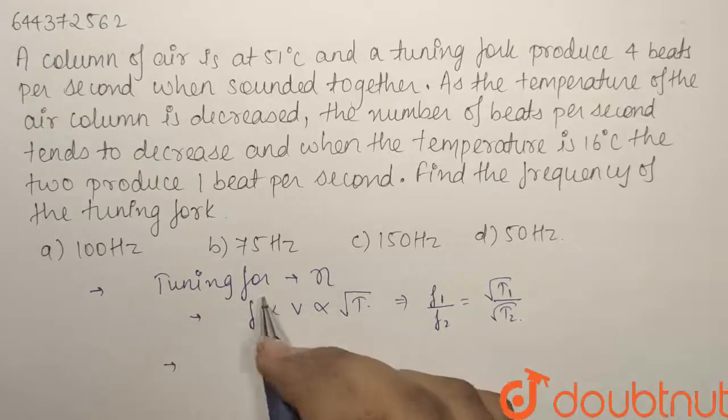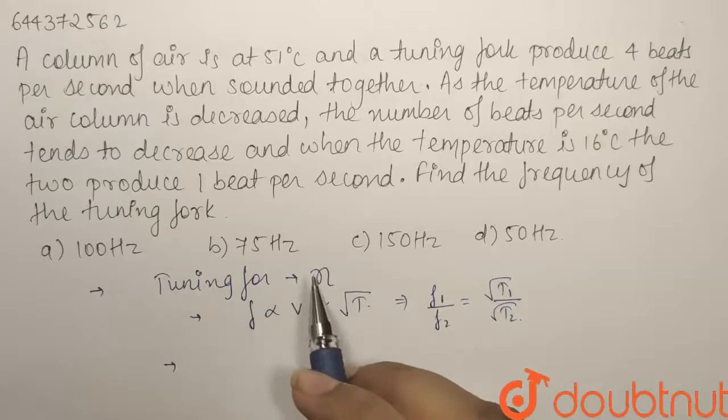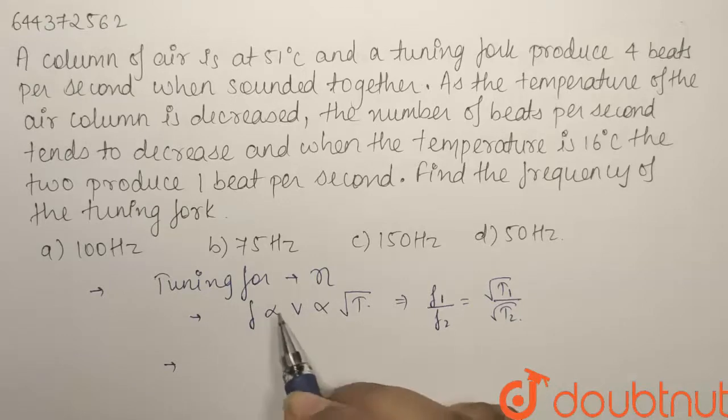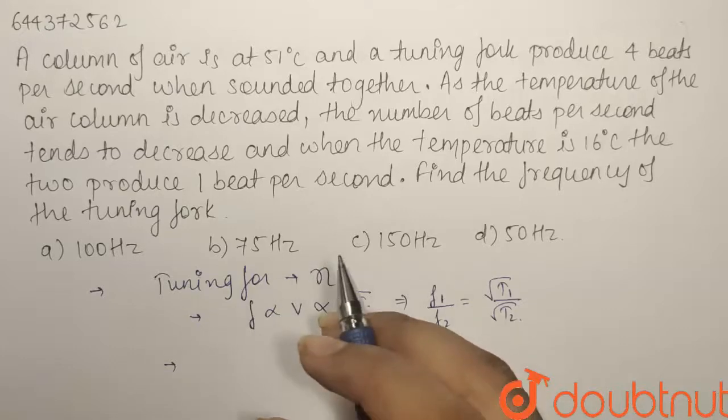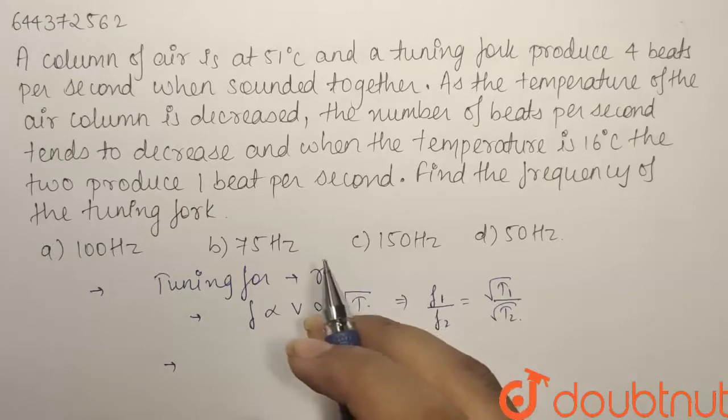For the first case when the number of beats is 4, let us assume that the air column has greater frequency than the tuning fork. Why are we assuming that? Because as we are decreasing the temperature, the value of F is going to decrease, the frequency of the air column is going to decrease and as the number of beats is decreasing.